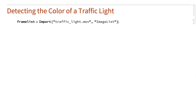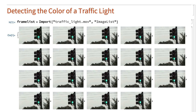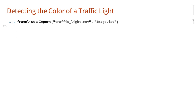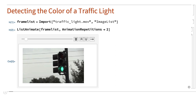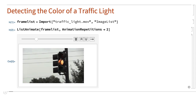For the next example, consider the task of determining the color of the light in each frame of a video of a traffic light. These inputs import a list of frames from a .mov file and play the result as a movie. The strategy here is to first identify each of the three traffic light colors, and then determine the color of the traffic light in each frame by finding which of those identified colors most closely matches a color in that frame.